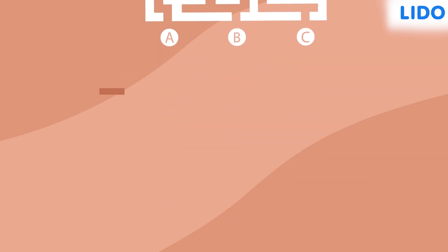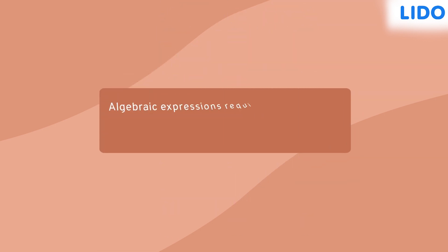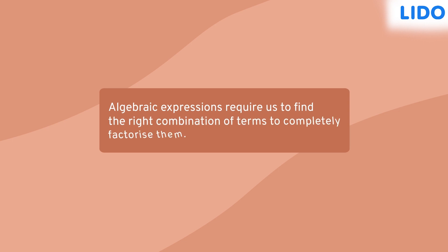Like the maze, even algebraic expressions require us to find the right combination of terms to completely factorize them. Let's see what that means.